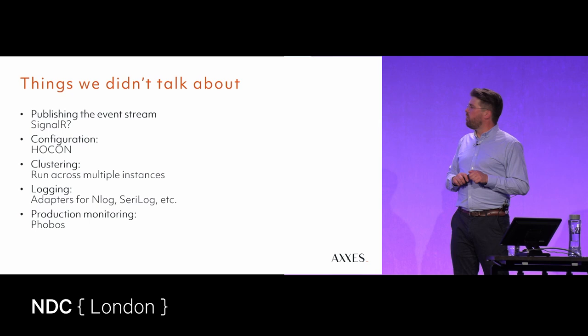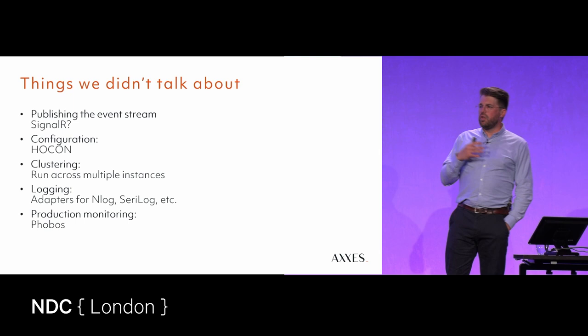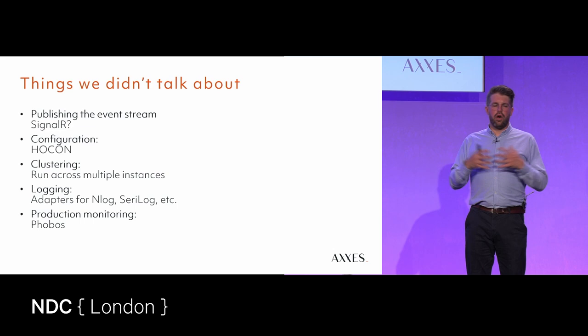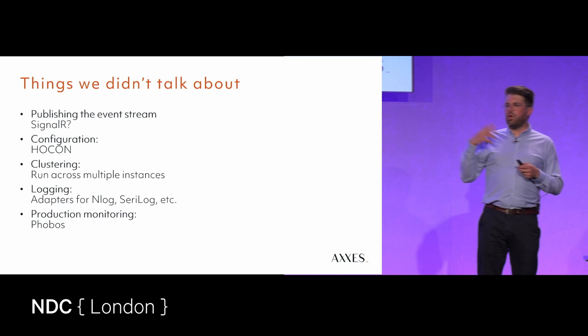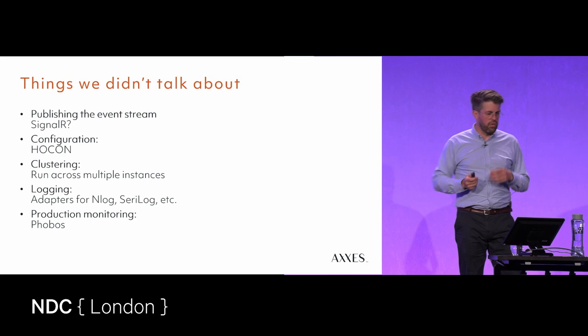Logging is something we didn't talk about, but there are adapters for pretty much any logging or observability framework. The only paid tool from Petabridge — because Akka.NET is free and open source — is a production monitoring system at about 4,000 euros a year. It allows you to monitor how many actor instances are in memory, how big the inboxes are, what your average time to processing is — a whole bunch of metrics for monitoring a large actor system in production. If you're serious about this, look into it.